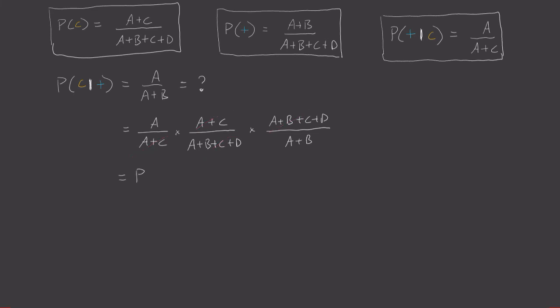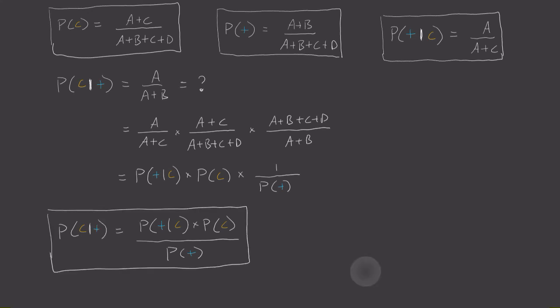This first term is the same as expression three, and this second term is the same as expression one, and this third term is, well, expression two but flipped upside down. If we put all of this together, then we have Bayes' theorem. Here it is.